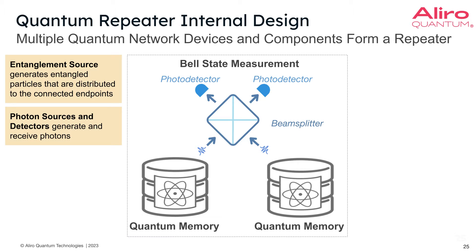There are also photon sources and detectors within this repeater. These generate and receive photons on either side of the system, within the repeater.